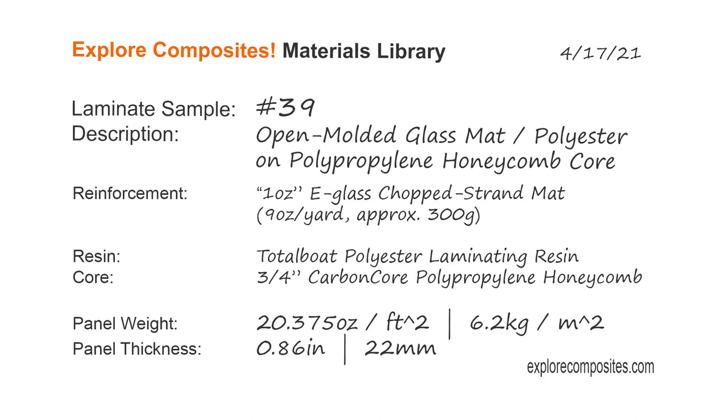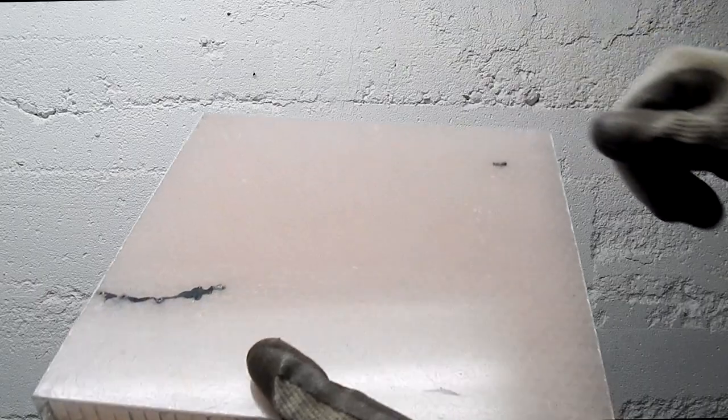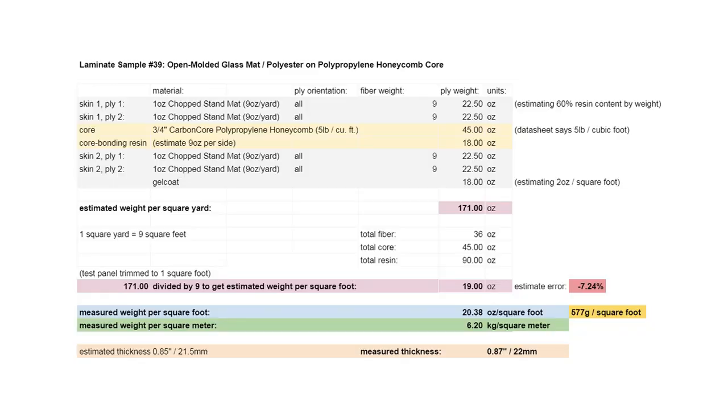Welcome to the Explore Composites materials library. This is laminate sample 39. It is a glass mat polyester resin on a three-quarter inch carbon core polypropylene honeycomb.